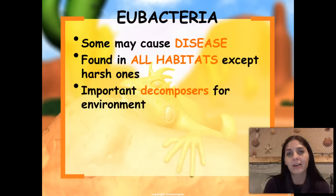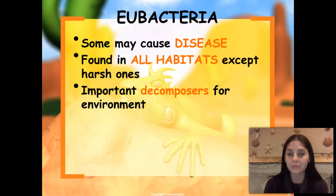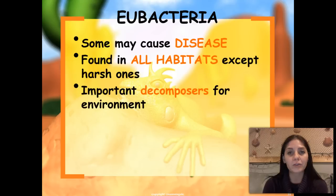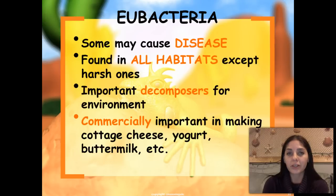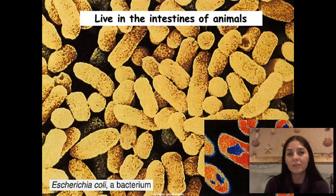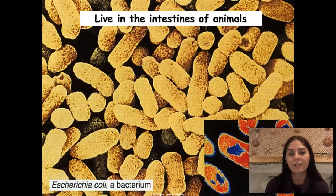Eubacteria are found everywhere except extreme environments — those we leave to the extremophile archaea. Eubacteria play a very important role in ecosystems because they're decomposers, meaning they break down dead or decaying materials so those elements can be used by other organisms. Commercially, they're important in making cottage cheese, yogurt, and buttermilk. This is a picture of E. coli, one of the harmful bacteria that can live in our intestine — we could get it from undercooked meat.